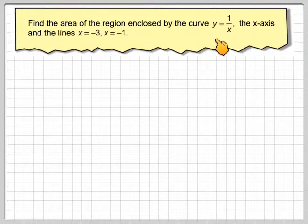Find the area of the region enclosed by the curve y equals 1 over x, the x-axis, and the lines x equals minus 3 and x equals minus 1.